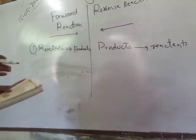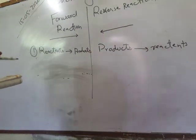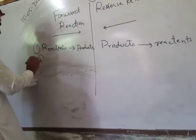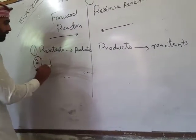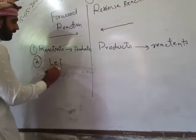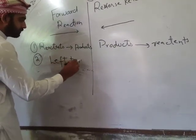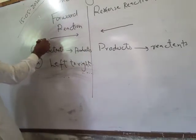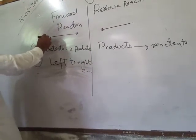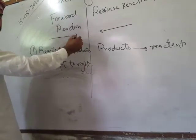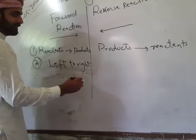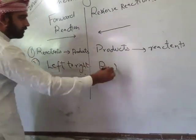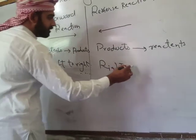The forward reaction is opposite or reverse. The forward reaction starts from left to right — left is the starting point and right is the ending point. If you move from right to left, that is the opposite direction.